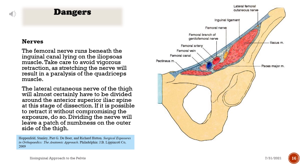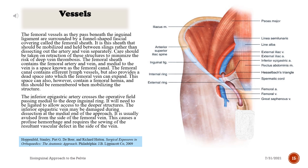Dangers — Nerves: The femoral nerve runs beneath the inguinal canal lying on the iliopsoas muscle. Take care to avoid vigorous retraction, as stretching the nerve will result in paralysis of the quadriceps muscle. The lateral cutaneous nerve of the thigh will certainly need to be divided around the anterior superior iliac spine. If it is possible to retract it without compromising the exposure, do so; dividing the nerve will leave a patch of numbness on the outer side of the thigh.